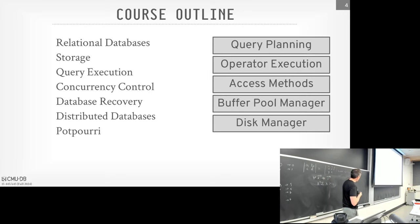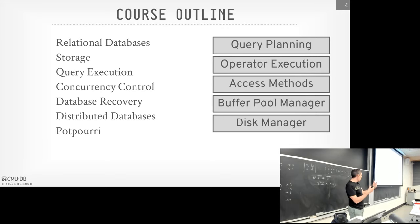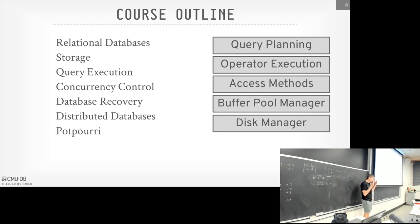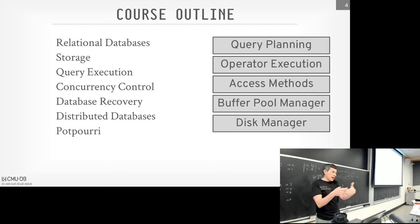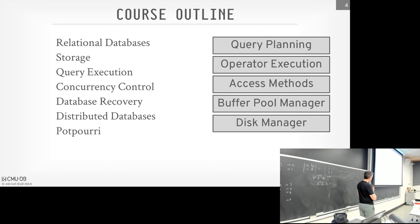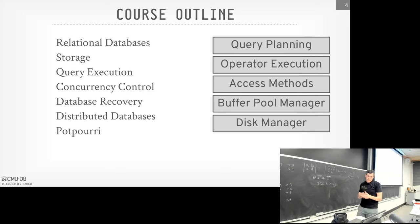The overall course outline is as follows: we've already covered relational databases at the logical level. Going down, there are a bunch of different layers of the system, and we're going to go in reverse order from how the system is actually implemented — starting at the very bottom, the disk/storage layer, then working our way up. Think of the database system we're building throughout the semester as made of a bunch of layers. Each layer abstracts away details and exposes an API that layers above and below can interact with. At the lowest layer is the thing that talks to disk, then the buffer manager brings things into memory, then access methods, then query execution, then SQL planning.